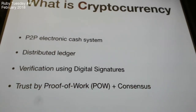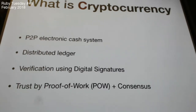So basically, cryptocurrency is not just a blockchain. It's basically a community cash system — an electronic cash system. It uses something called a distributed computer ledger, and it uses two significant technologies. One is called digital signatures and another one is called proof of work. Both of these things are the core elements of what makes cryptocurrency or blockchain work.